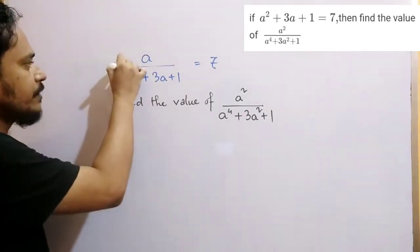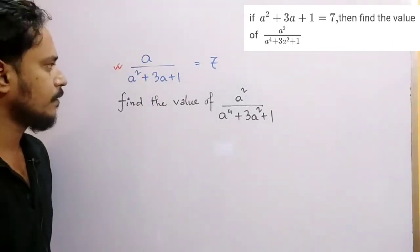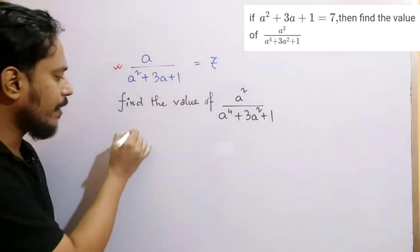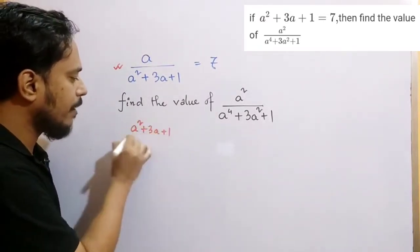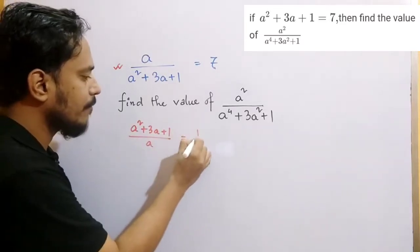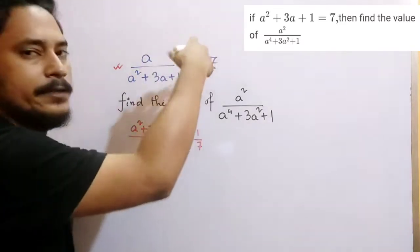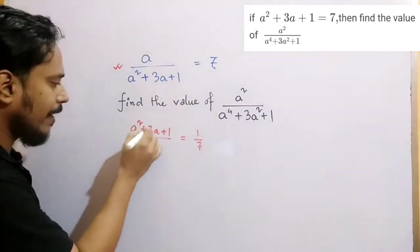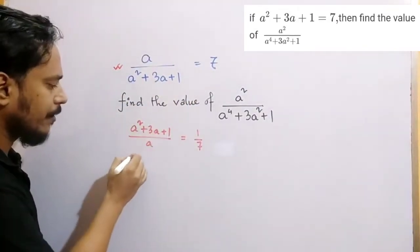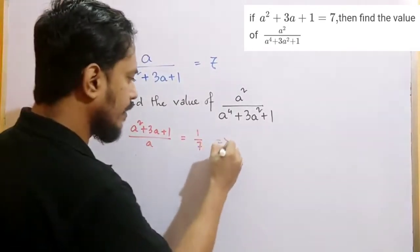This information is given to us. We can write down a squared plus 3a plus 1 by a as 1 by 7. And divide each term by a, then we will clearly see that